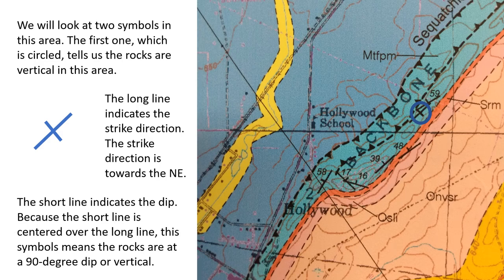The first symbol on the map has a long line with a shorter line perpendicular to it. The long line indicates the strike direction, which is towards the northeast. The short line indicates the dip. Because the short line is centered over the long line, this symbol means that the rocks are at a 90-degree dip, or vertical.